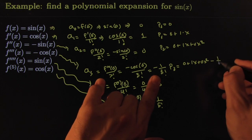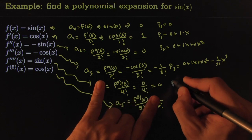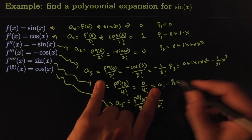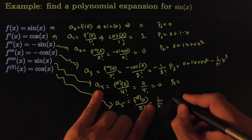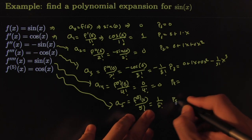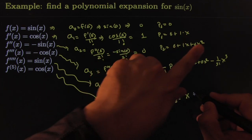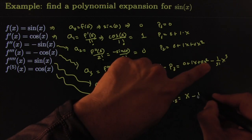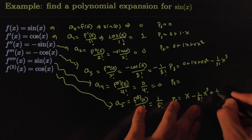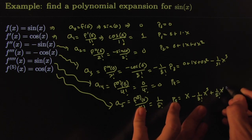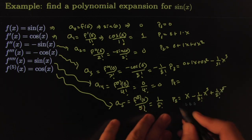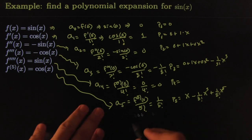p_3 would be the same thing minus 1 over 3 factorial x³, and so on and so forth. p_4 is the same thing as p_3 because you're adding 0. And then p_5 is equal to—I'll clean it up here just so we can see the pattern—it becomes x (this goes away) minus 1 over 3 factorial x³ plus 1 over 5 factorial x^5.